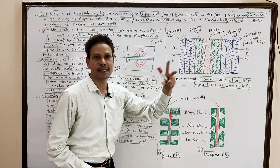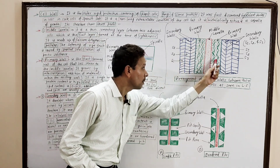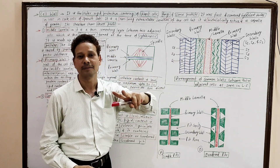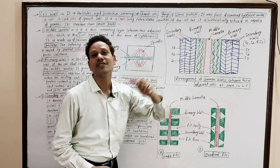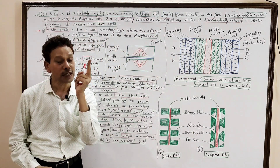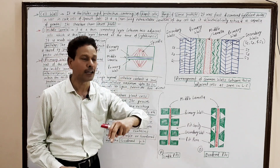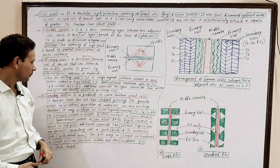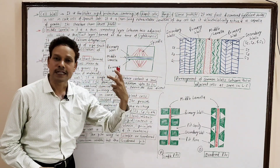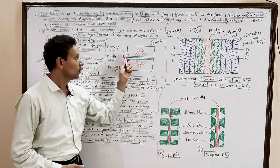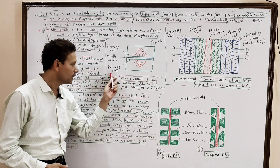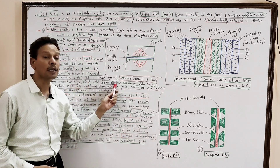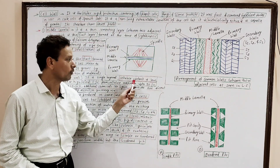Intussusception means deposition of its material occurs within the existing layer — inside the existing layer. Deposition of additional material within the existing layer is called intussusception. This primary wall is a single layered, first formed layer of a plant cell. Its cellulose content is low, but its protein content is high, and its hemicellulose content is maximum, about 50 percent.